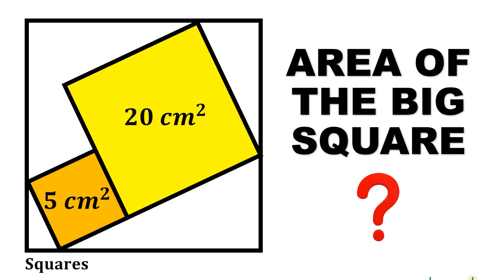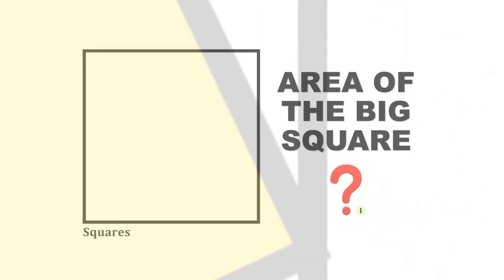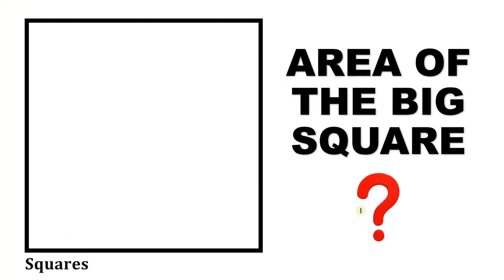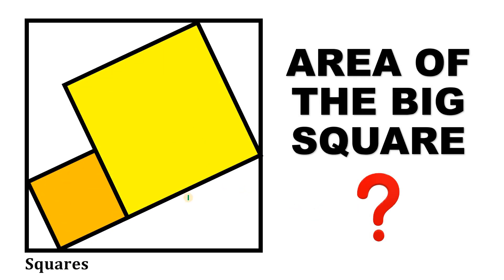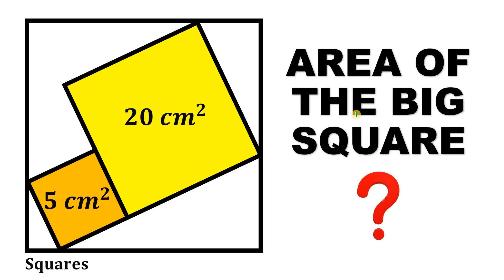Can you solve this geometry challenge? Here's the question. Given this big square, what we're going to do is draw two squares inside of this big square. This orange square has an area of 5 square centimeters, and the area of this yellow square is 20 square centimeters. The question is: what is the area of the big square?